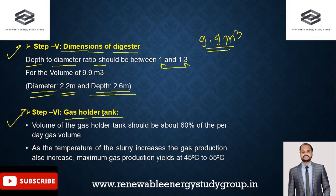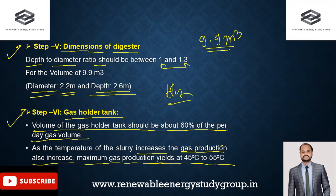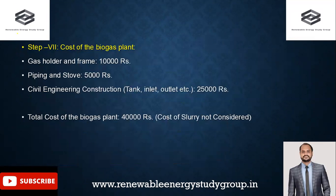Step 6 addresses the gas holder tank. The gas holder volume should be about 60% of the daily gas volume, for either a floating dome or fixed dome type. As the temperature of the slurry increases, gas production also increases. Maximum gas production occurs at 45°C to 55°C, which is the ideal temperature range for biogas generation in the digester.